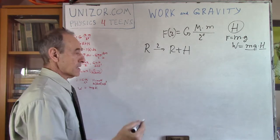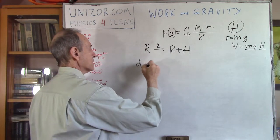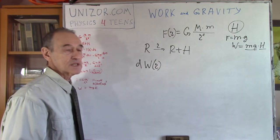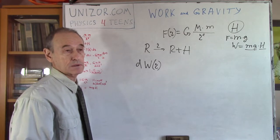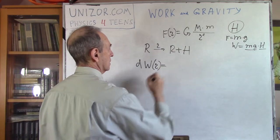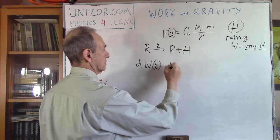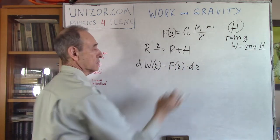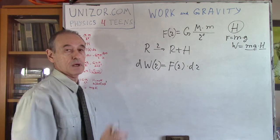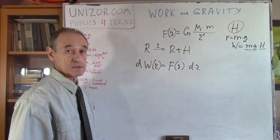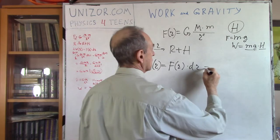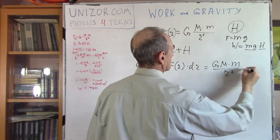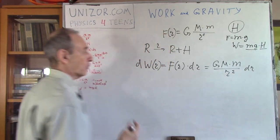So, again, differential of the work which is performed on the distance r from the center is the force times the infinitesimal increment of the distance from the center, right? So, which is GMm/r² dr. Now, what should we do now?